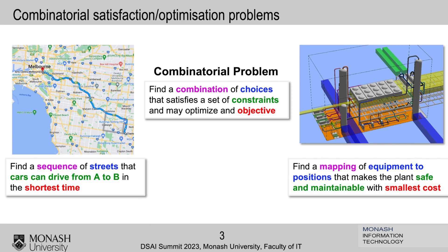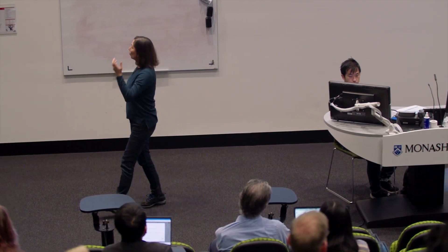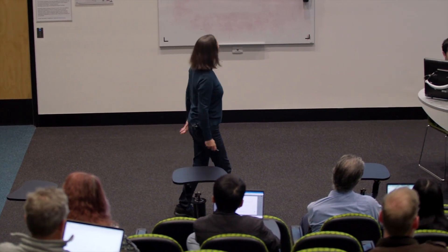There are so many problems like this everywhere. Another one: give me the optimal plant design layout. I want to find a mapping of equipment — they gave me the equipment and I need to find the coordinates, whether on the floor or up there, and the rotation — so that the plant is safe and maintainable. There are constraints for safety and maintenance, and we minimize the cost.